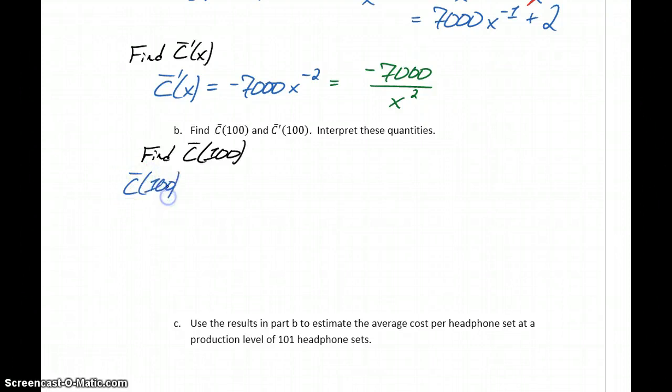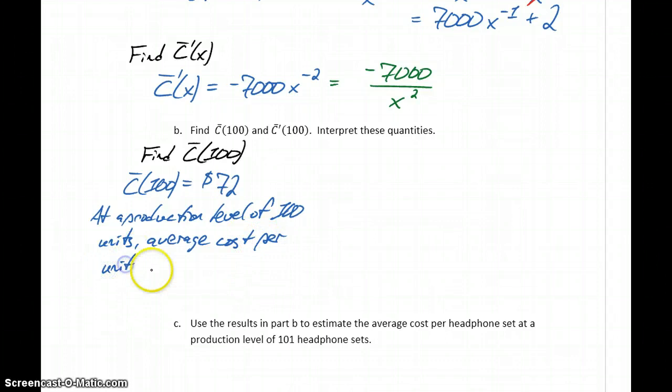First thing we want to do is find the average cost at a production level of 100 units. We'll take a look at our average cost function, plug in x equals 100 which should give us a result of 72 dollars. And what that means is that at a production level of 100 units, our average cost per unit is 72 dollars.